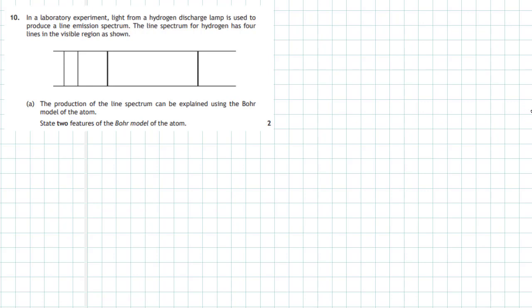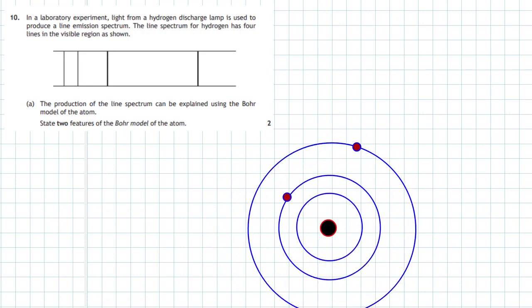For Part A, it says the production of a line spectrum can be explained using the Bohr model of the atom. What we have to do here to get our two marks is state two features of the Bohr model of the atom. We'll start off with a picture of the Bohr model, which was proposed by Niels Bohr.